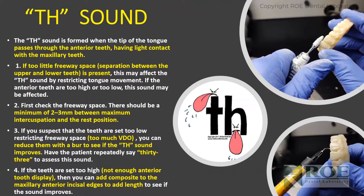If you suspect the teeth are set too low, restricting freeway space or vertical dimension too much, reduce the plane — whether it's the upper or lower — and check which one is prudent to fix. You may also need to reduce the anterior teeth, lower or upper. Any of those things are possible to improve the 'th' sound, and saying '33' is a good exercise for the patient until the problem is solved.